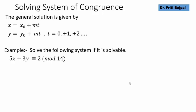Let's come to an example. What if we are asked to solve the system 5x plus 3y is congruent to 2 mod 14 and minus 3x plus 4y is congruent to 7 mod 14?